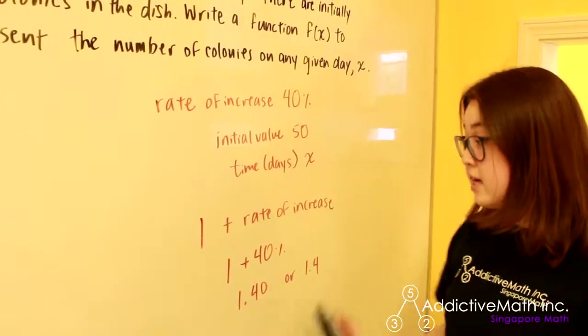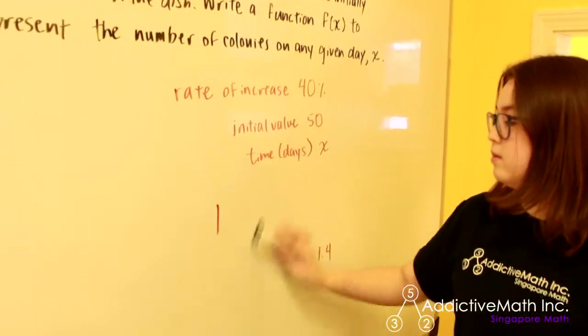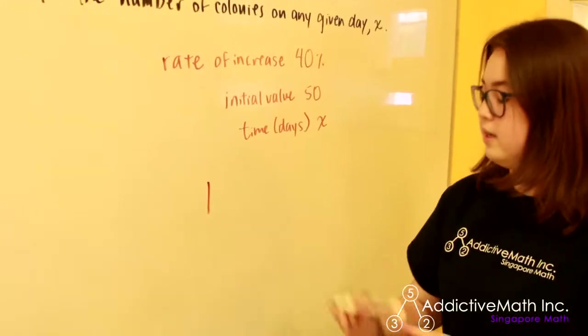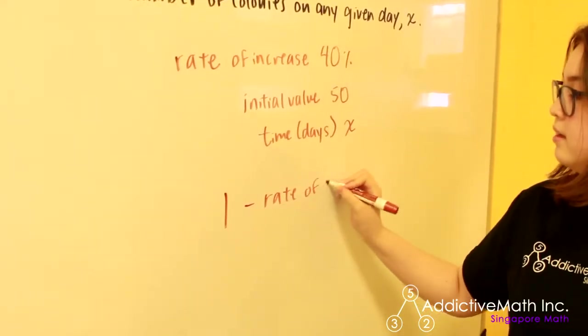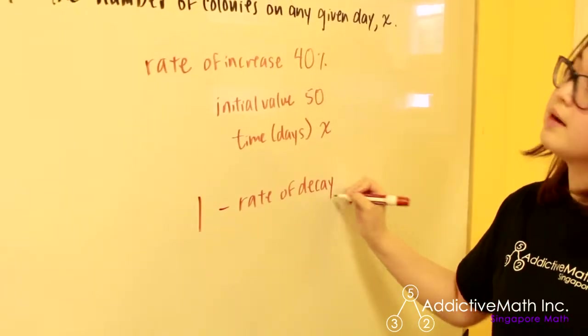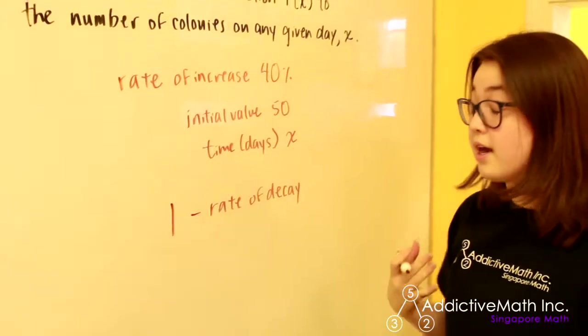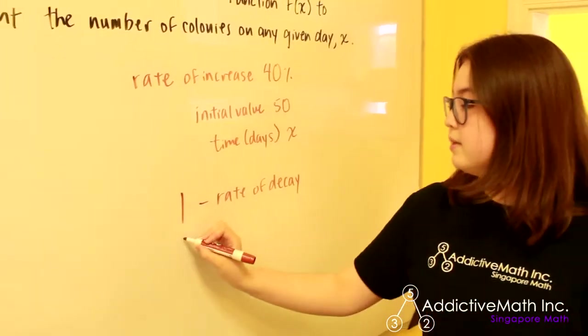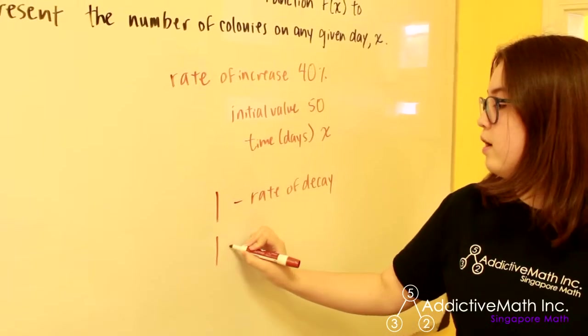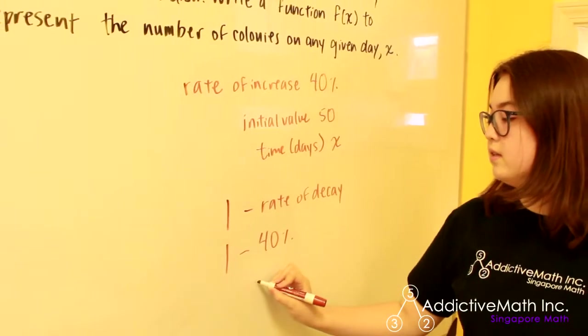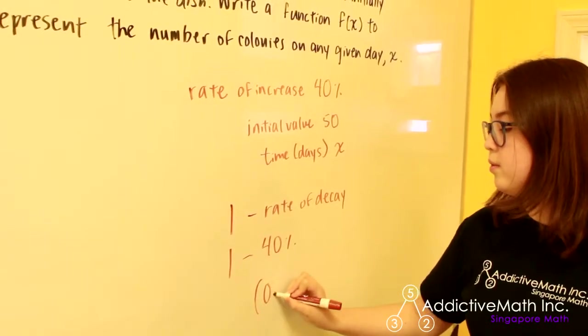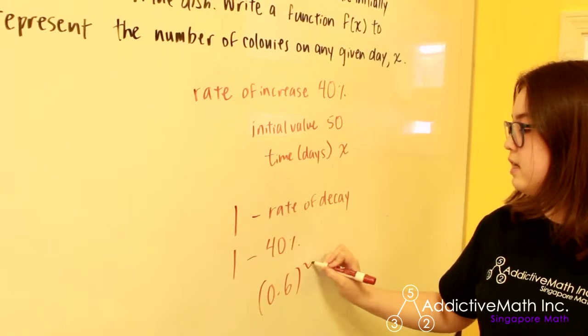If something is decaying, then we do 1 minus the rate of decay. So if we were to say that we had a population of bacteria that was dying off, then we would say 1 minus 40 percent and so we would actually do 0.6 to the x power.